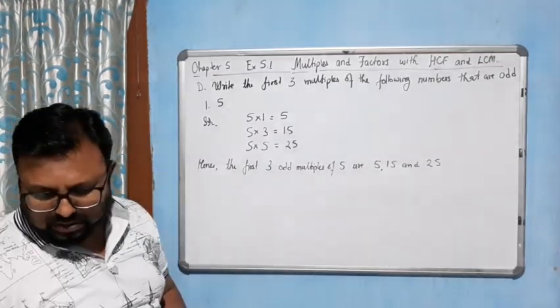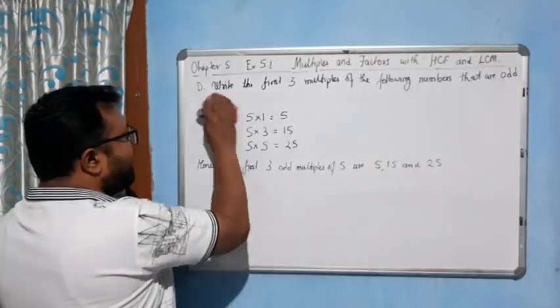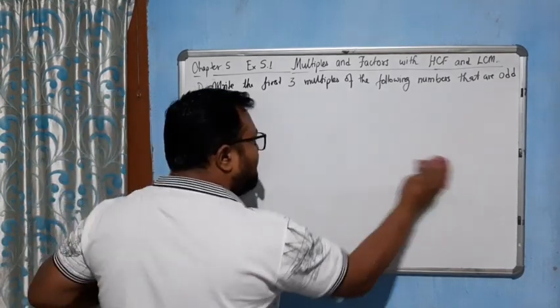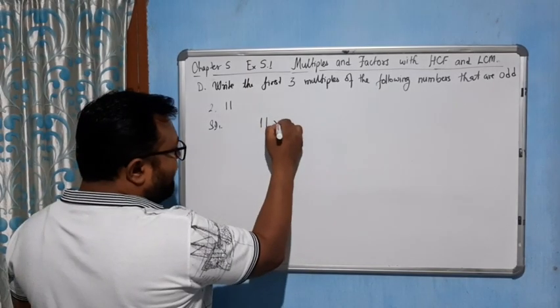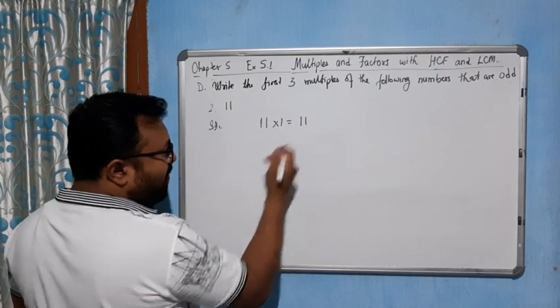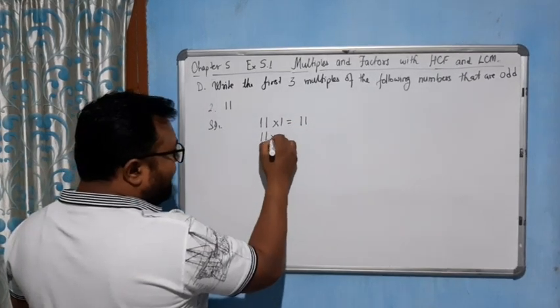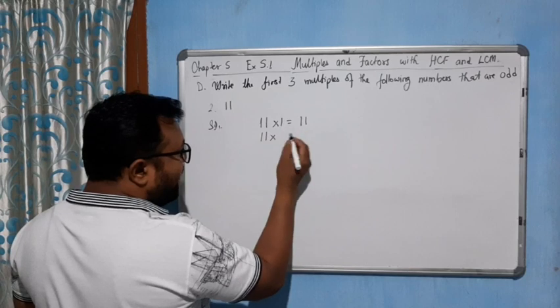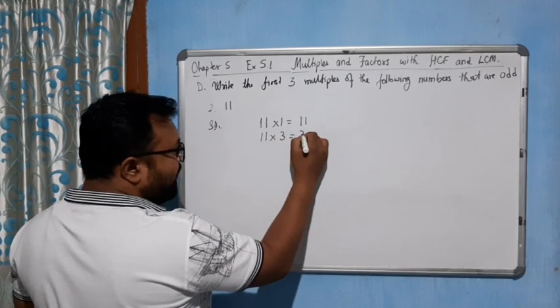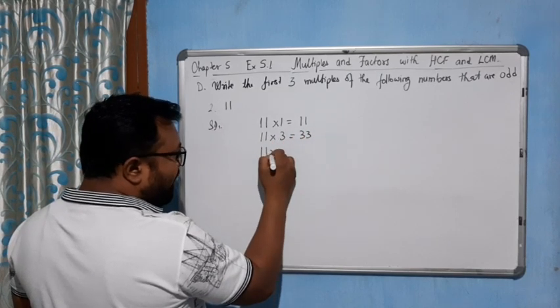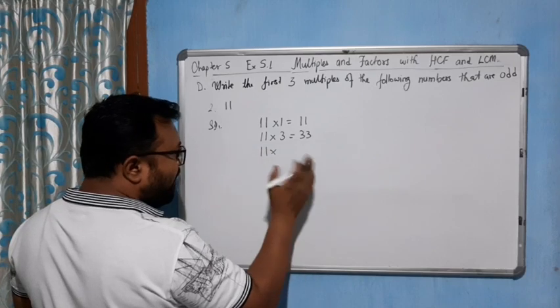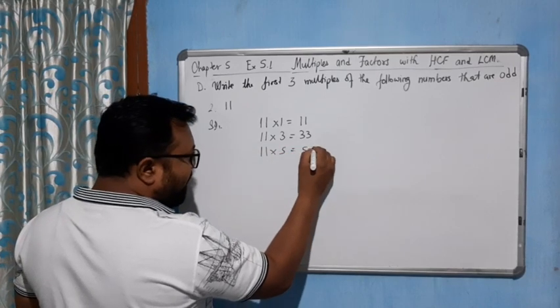Now come to the next question, this is 11. So 11 into 1 gives you 11, it's an odd number. If we take 11 times 2 gives you 22, so we will go for the next number 3. 11 times 3 is 33. 11 times 4 is 44, so not required. 11 times 5 is 55.